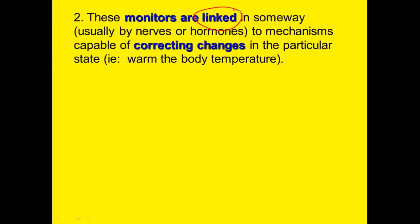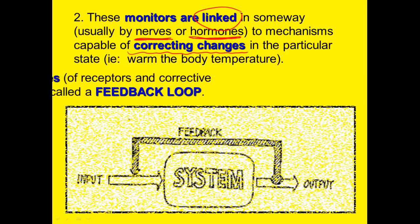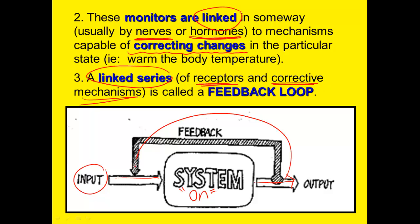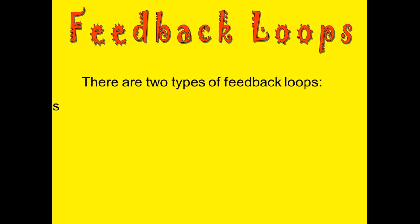These monitors can't be isolated by themselves. We have to link them, usually by a nerve or a hormone, to a mechanism — a part of your body that can actually help to correct that change. When you link a receptor to a corrective mechanism, we call that a feedback loop. In a feedback loop, you get some input of information that will turn the system on. When the system is on, it causes a change — an output — and many times that change will then turn the system itself back off again.